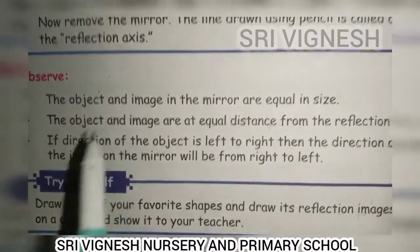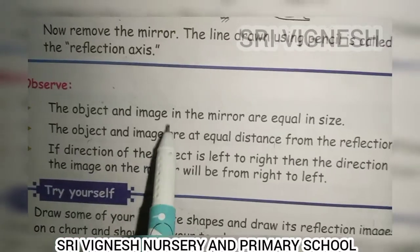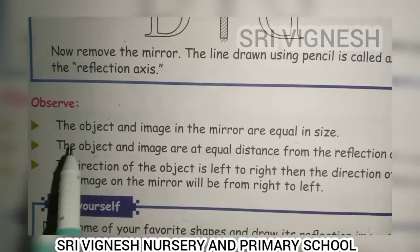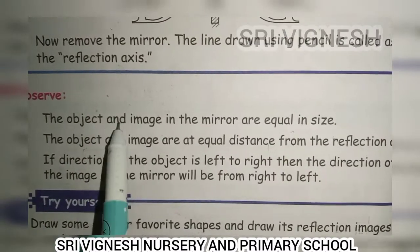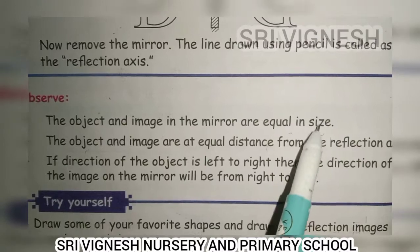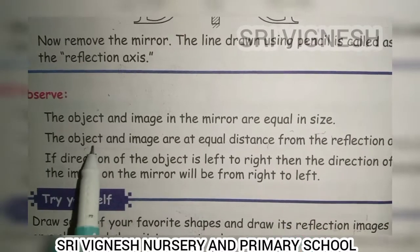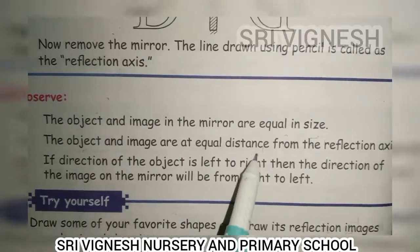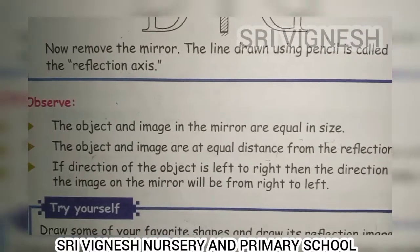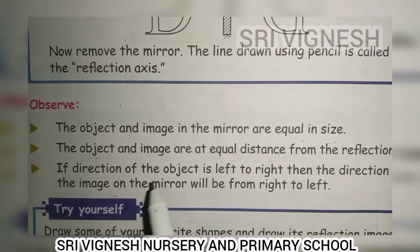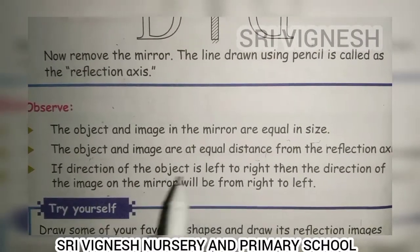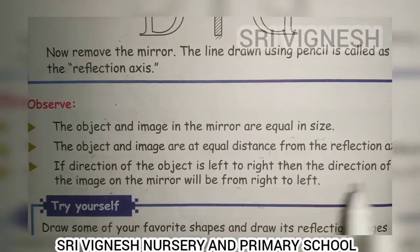First we will see this. The object and image in the mirror are equal in size. Now we will see the size of the object — the object and its reflection are equal from the reflection axis. If the direction of the object is left to right, then the direction of the image on the mirror will be from right to left.